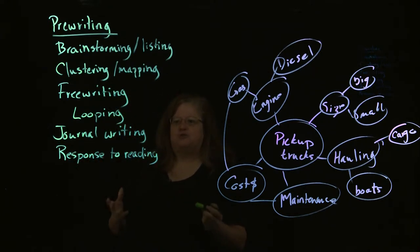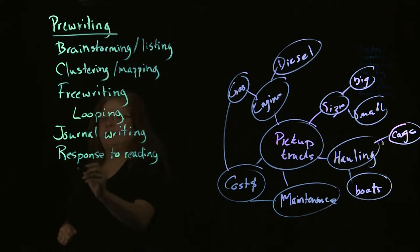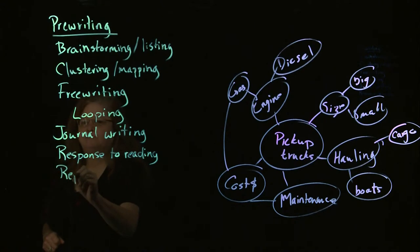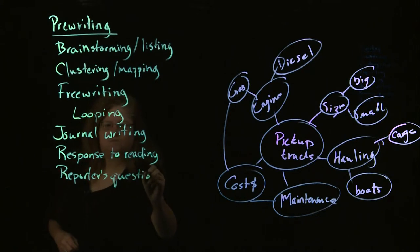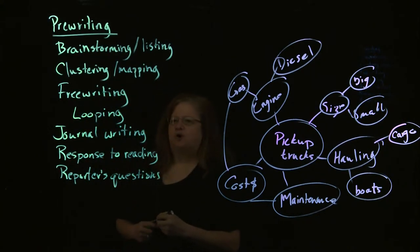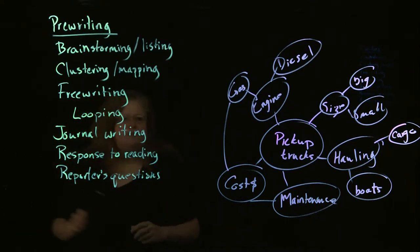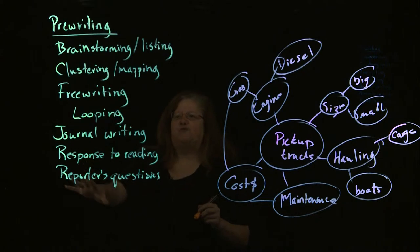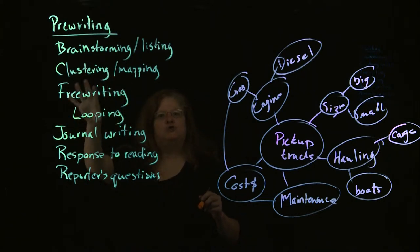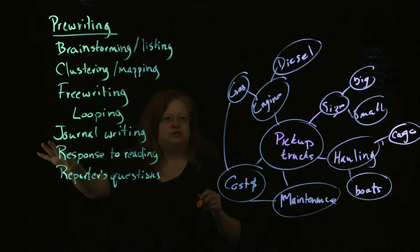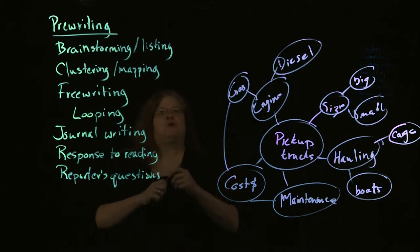Another prewriting technique you can use, and this is one that's really good if you like to have a formula to follow, and that's the reporter's questions. The reporter's questions, which are also known as the five W's and the H, are things that, if you like to have a formula, it's a way you can be sure that you are covering all of the bases.